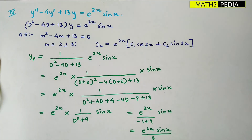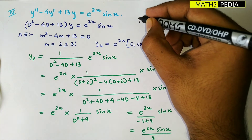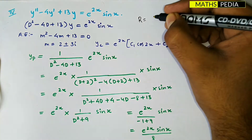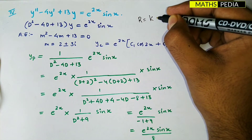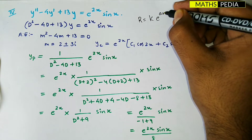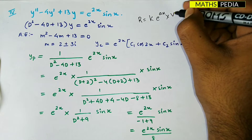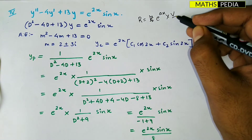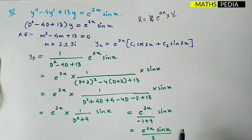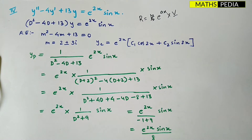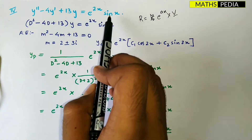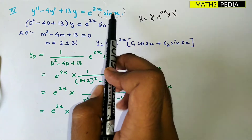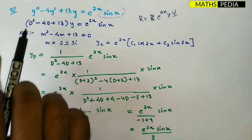Welcome back. In this video we are going for the fourth and final case, where R is equal to e^(ax) into v, where v is a function of x — it can be any function of x. So we'll discuss what our functions are. You can see over here: e^(ax) into function of x.